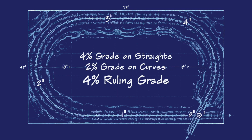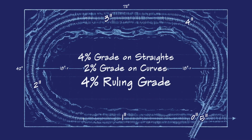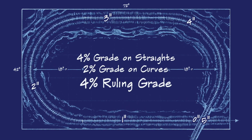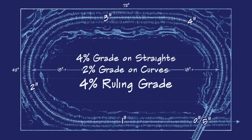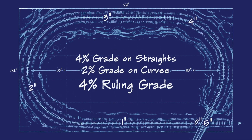This gives us a ruling grade of 4%. The term ruling grade simply refers to the steepest section of a grade on a run.